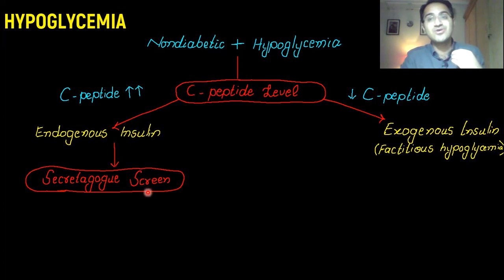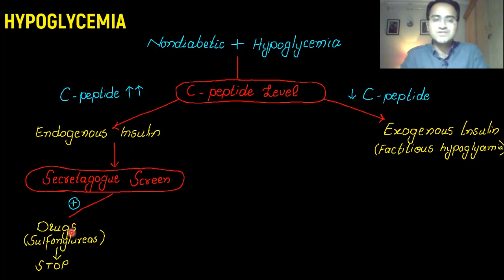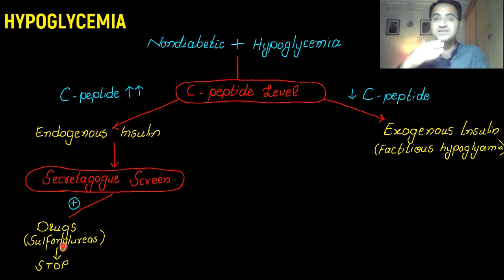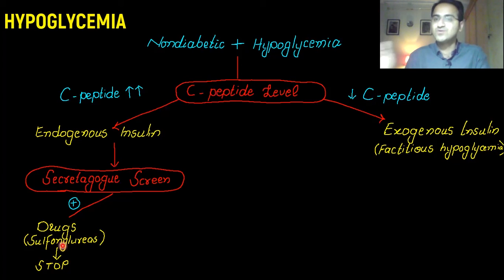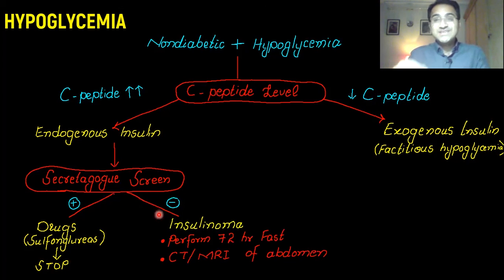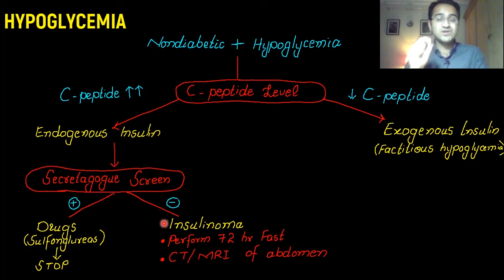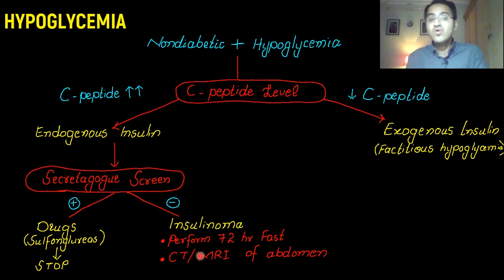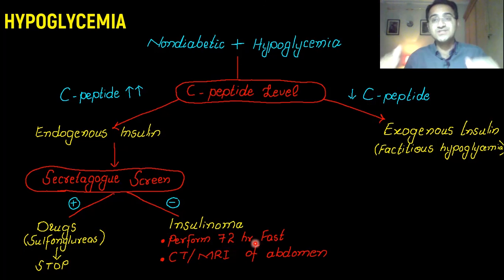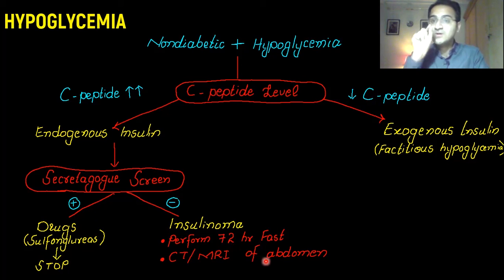If the secretagogue screen is positive, the patient is likely taking sulfonylurea — this is factitious hypoglycemia, often related to a psychiatric problem, and stopping the drug resolves the episodes. If the secretagogue screen is negative and C-peptide is elevated, suspicion for insulinoma rises. You then perform a 72-hour fast and check insulin levels; if insulin remains elevated, insulinoma is likely. You confirm with CT and MRI of the abdomen to locate the tumor.